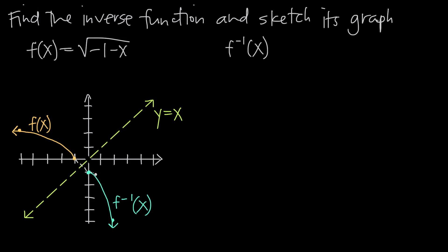But how do we find the equation that represents this inverse function? First, we start with the original function f of x and replace f of x with y. So instead of f of x, we write: y is equal to the square root of negative 1 minus x.